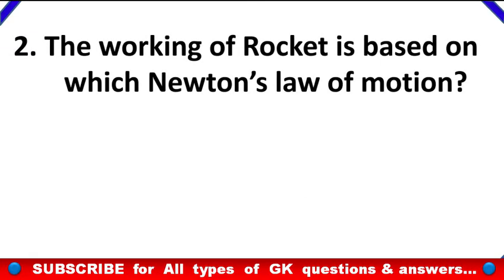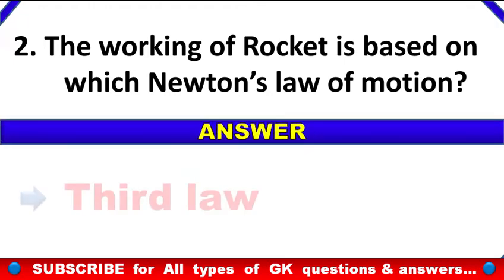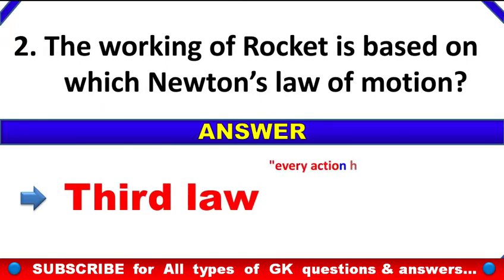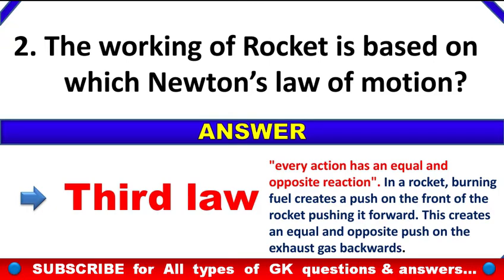The working of a rocket is based on which Newton's law of motion? Answer: Third law. Newton's third law states every action has an equal and opposite reaction. So in a rocket, burning fuel creates a push on the front of the rocket pushing it forward. This creates an equal and opposite push on the exhaust gas backwards.